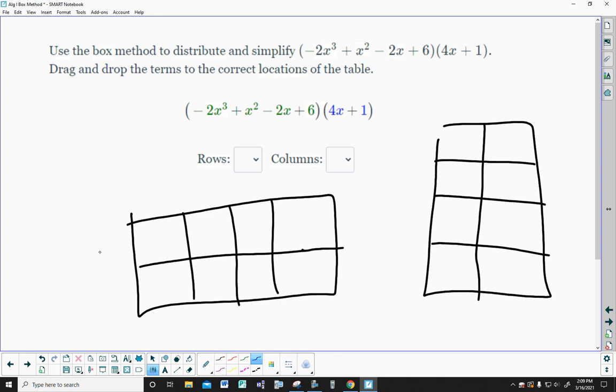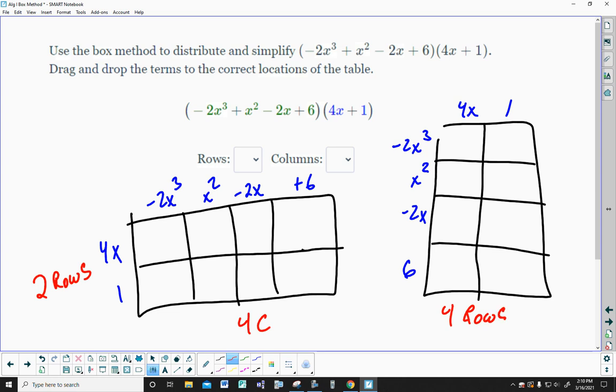So it doesn't matter which direction you're orienting it. I always hate it when people say orientating. No, you're orienting. Plus 6. Or you're writing it as 4x and the 1 up here. And the minus 2x cubed x squared minus 2x and the 6 down the side. But you have to choose the rows and the columns. And once you choose how many there are, it'll set the box up your direction. So in this one, there are 2 rows. 1, 2, 3, 4 columns. This one has 4 rows and 2 columns. It's up to you how you want to set it up.